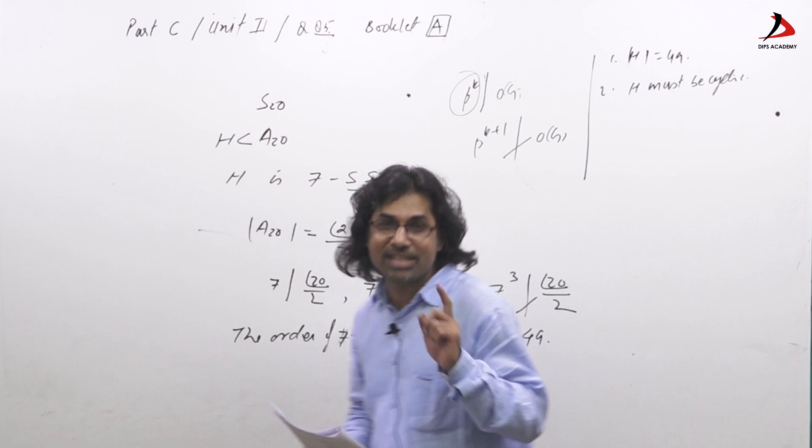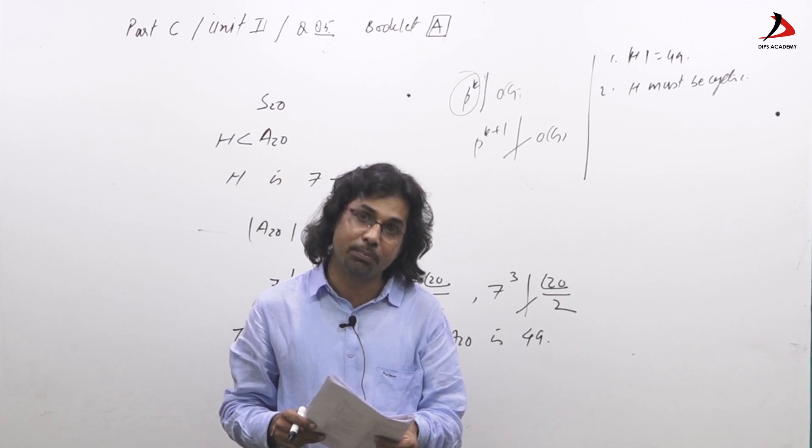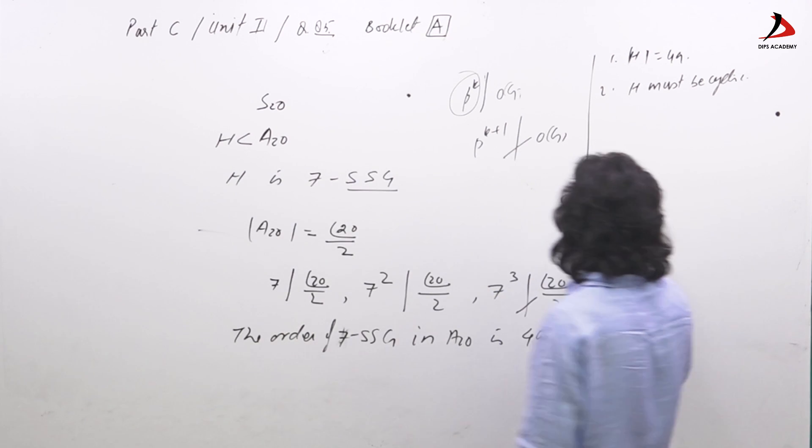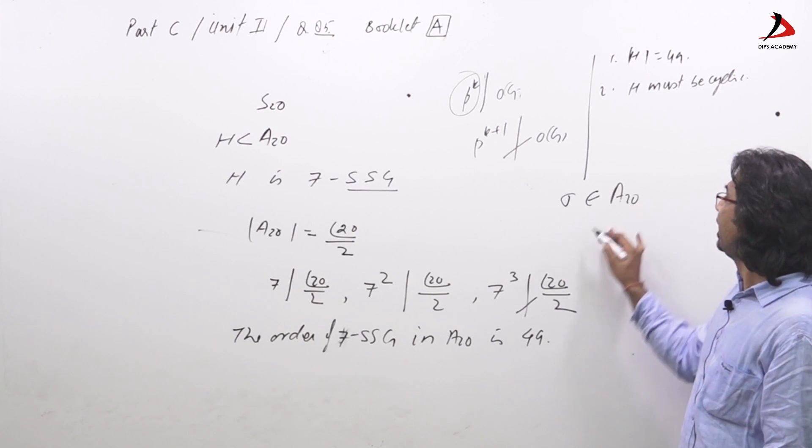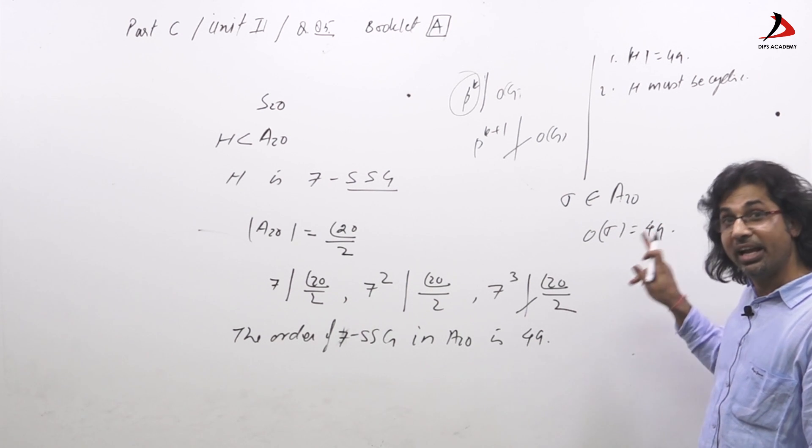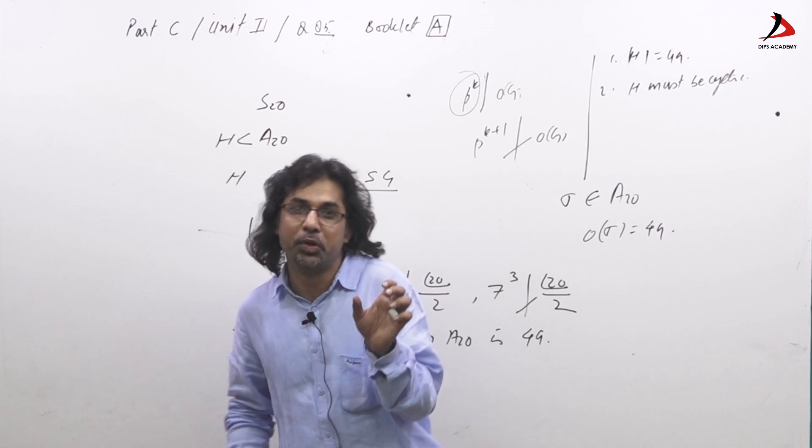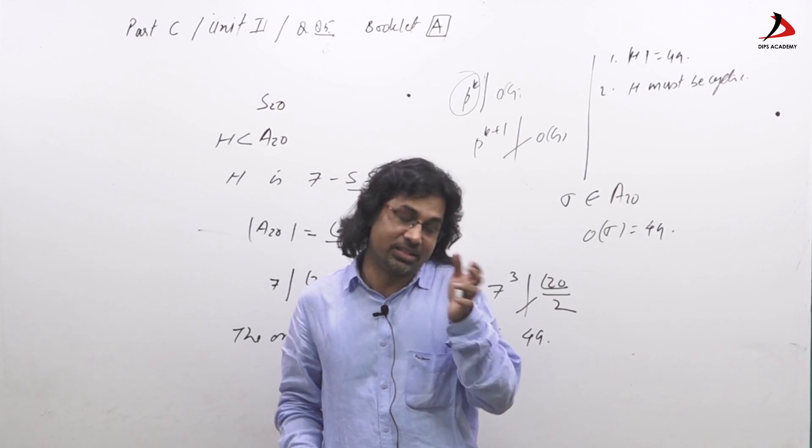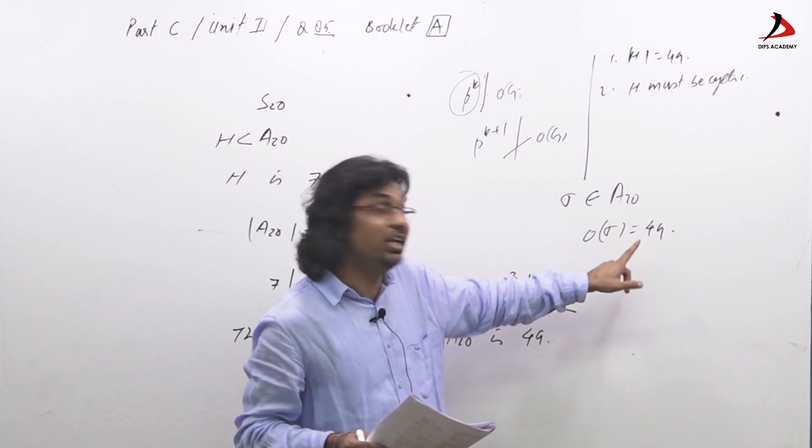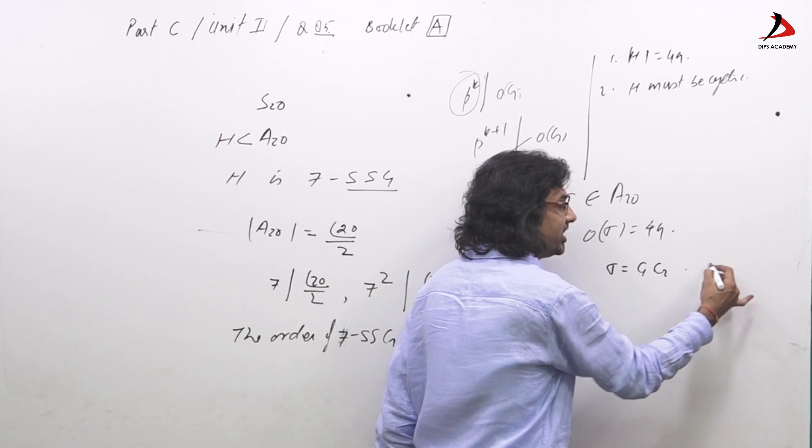Now if H is cyclic, that means A_20 has an element of order 49. If sigma belongs to A_20 and order of sigma is 49, it means sigma is a permutation whose cycle decomposition as a product of disjoint cycles has LCM 49.